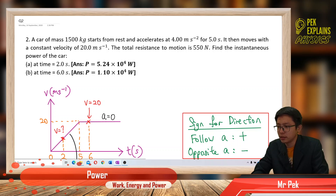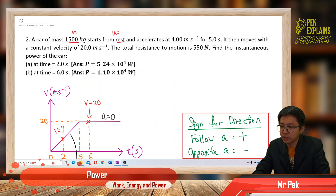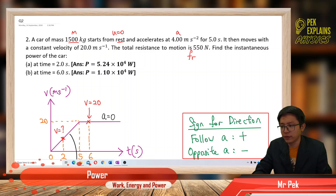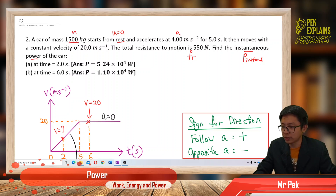Information given here: the mass of the car — it starts from rest, so initial velocity is 0. Acceleration for 5 seconds, then constant velocity of 20. Resistance to motion — so this is more to friction. We want to find instantaneous power at two time slots: 2 seconds and 6 seconds.